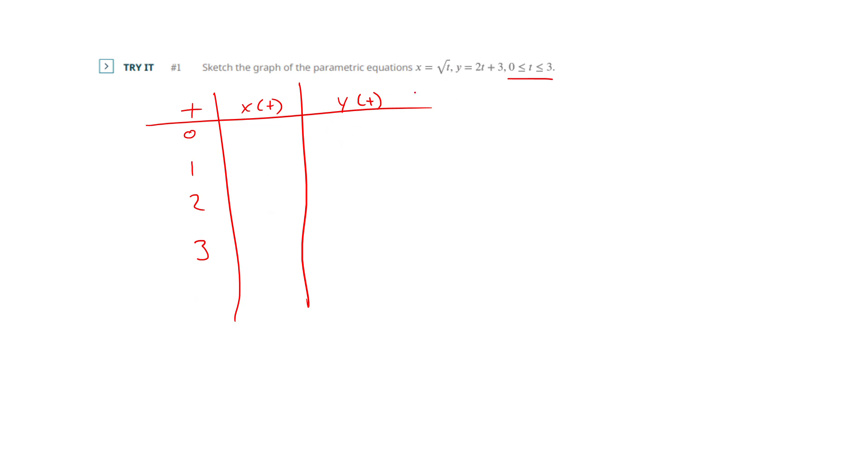I plug those values in. So I'm not going to do all of these, but x equals the square root of 0 is just 0. So if I put 0 in for t here, I get y is 3. I'll do one more here. So the square root of 1 is 1. So I'm putting 1, I'm putting the values of t into both equations this time to plot my points. So y, if I plug t as 1, I'd get 2 times 1 plus 3 and I get 5.